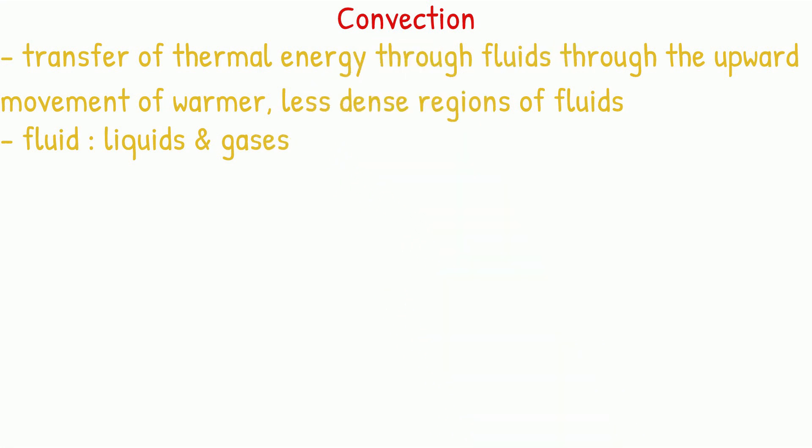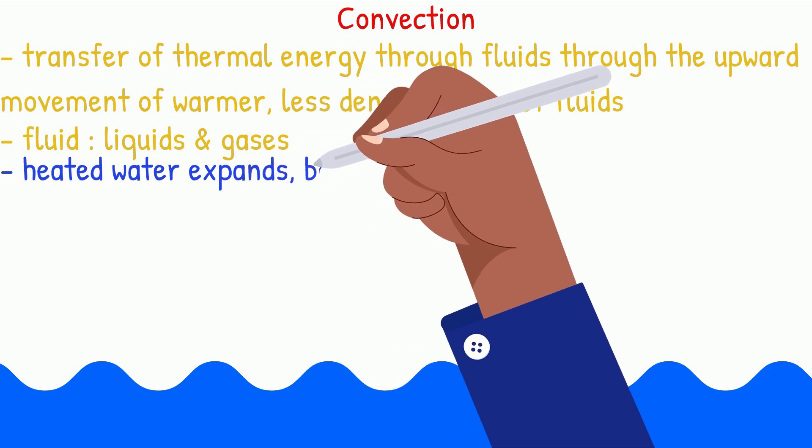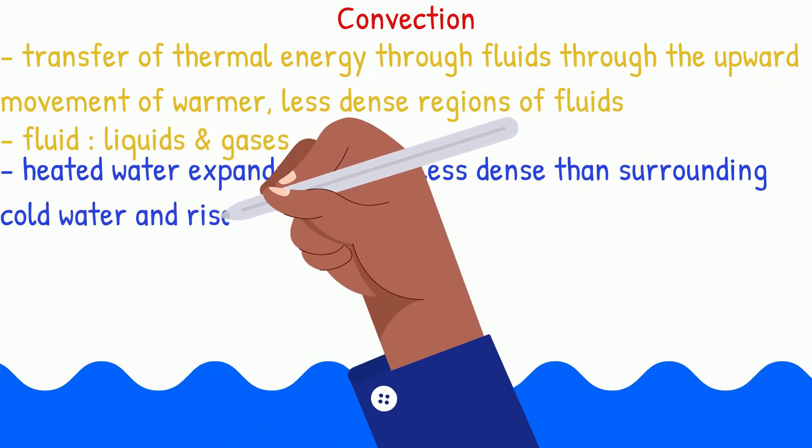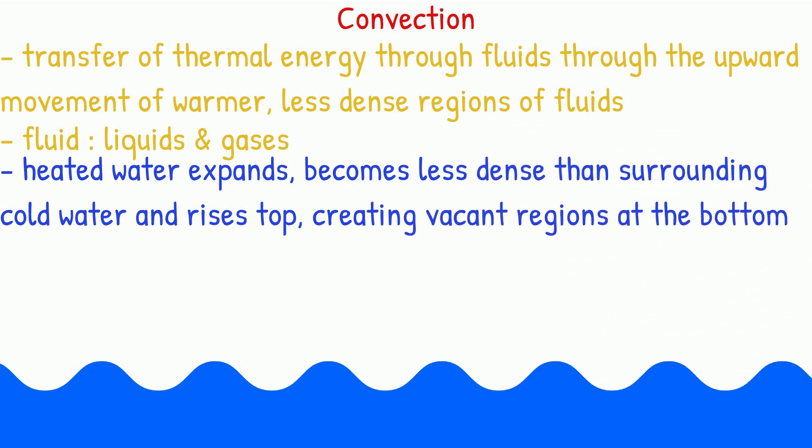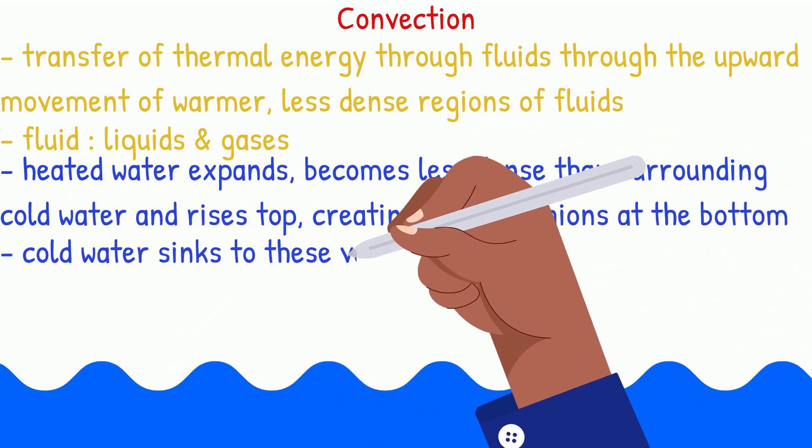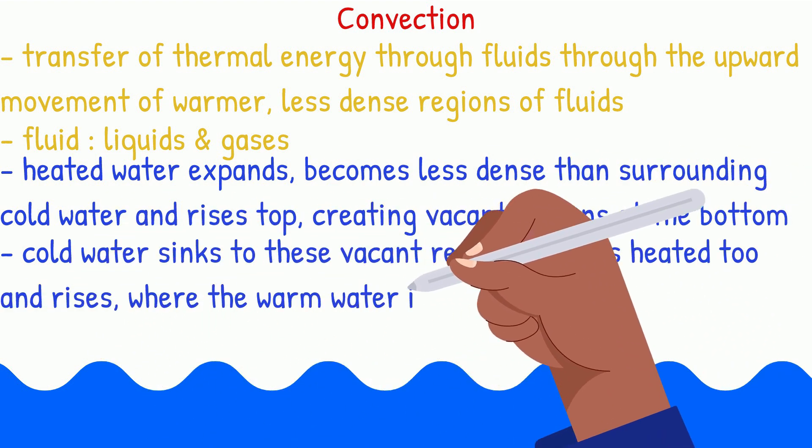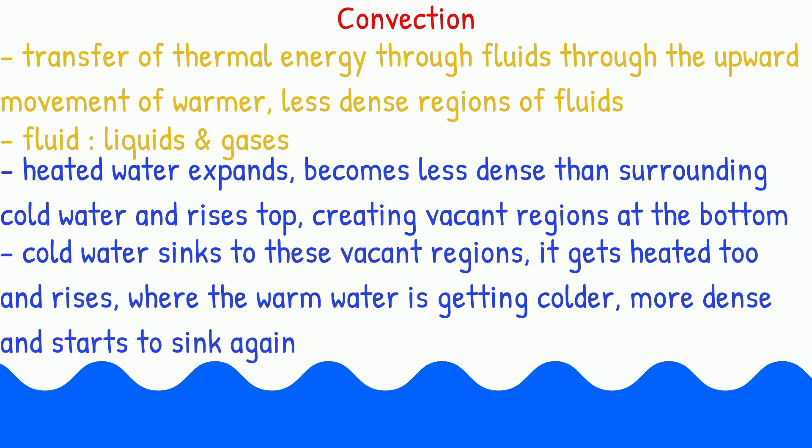If we take water as our example, when it is heated, the heated water expands, becomes less dense than the colder surrounding water and so it rises up to the top, creating vacant regions. The cold water sinks to the bottom, where it gets heated too and rises to the top, where the warm water is cooling and becoming more dense and sinking back to the bottom. This sets up a circulating current called a convection current.